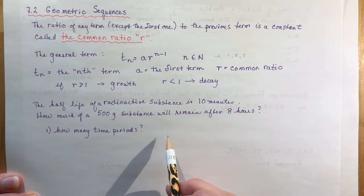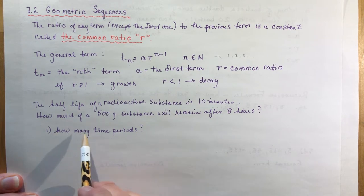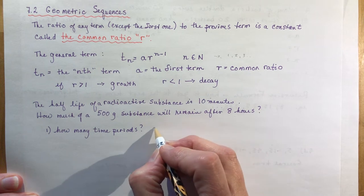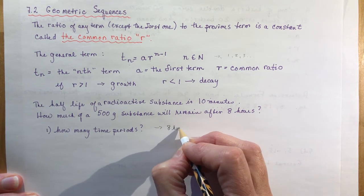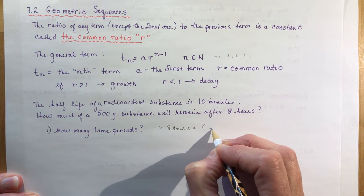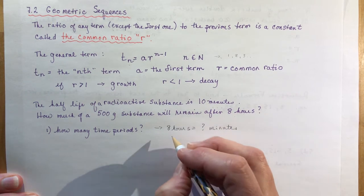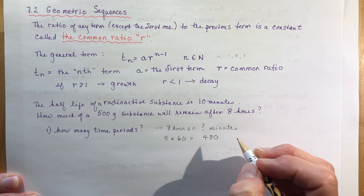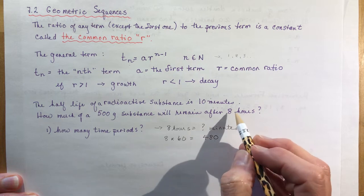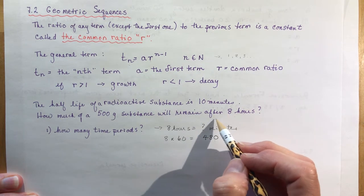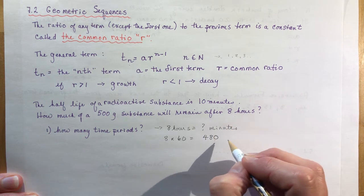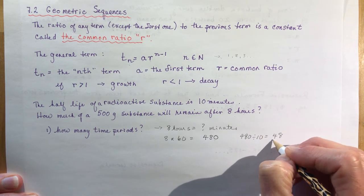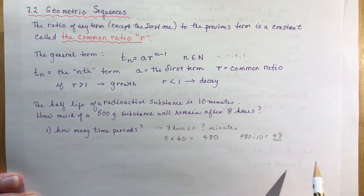How many time periods have gone by in 8 hours? Every half-life is 10 minutes, so first find how many minutes are in 8 hours: 8 times 60 equals 480 minutes. Then 480 divided by 10 gives us 48 — so the amount is halved 48 times.